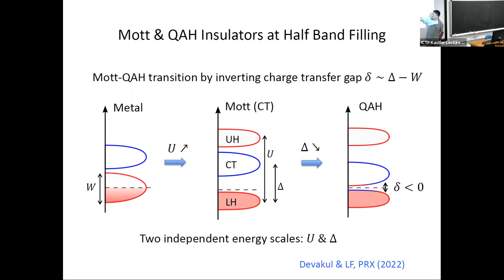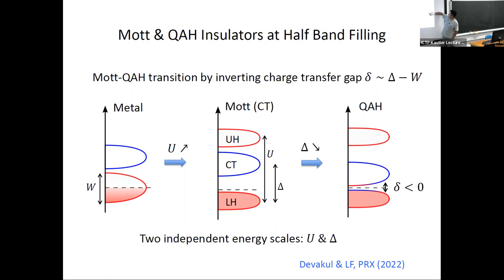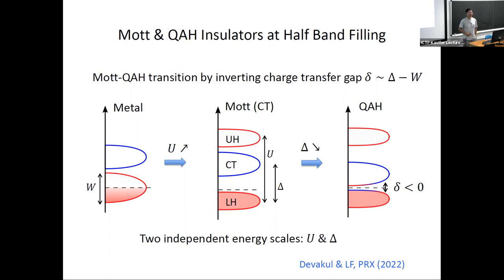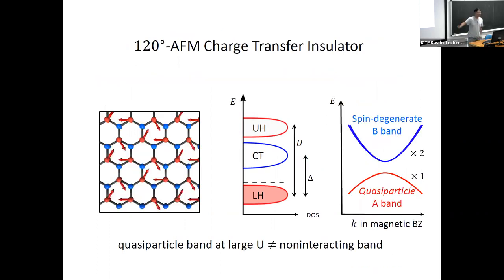When Hubbard U is very large and the charge transfer energy is also very large, we get a charge transfer insulator. The electrons on the A sites at half-filling form an antiferromagnetic Mott insulator with a Hubbard U energy gap. As we reduce the charge transfer energy δ, the charge transfer band moves towards the Fermi level. When the charge transfer energy is sufficiently reduced, the energy gap between the charge transfer band and the lower Hubbard band inverts. I'm going to show that in this inverted regime, the inverted charge transfer insulator is actually a quantum anomalous Hall state.